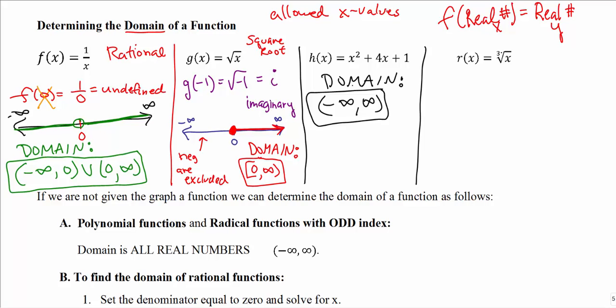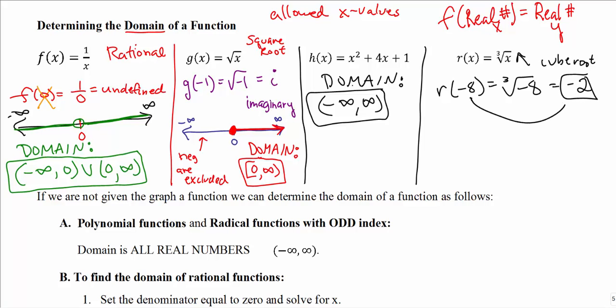The same is true for any odd-index radical, such as cube roots or fifth roots. For a cube root, we don't have any issues. For example, if I put in a negative 8, the cube root of negative 8 is negative 2 — real number in, real number out. So no issues with cube roots producing imaginary values.